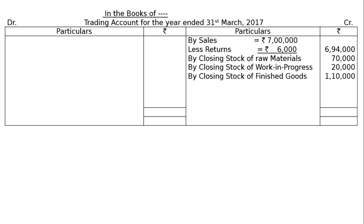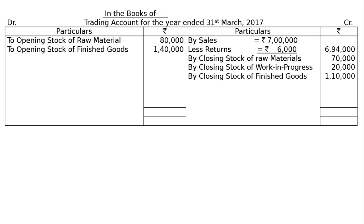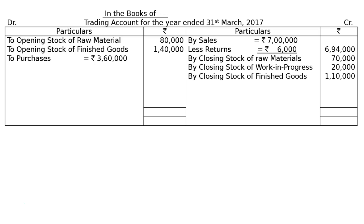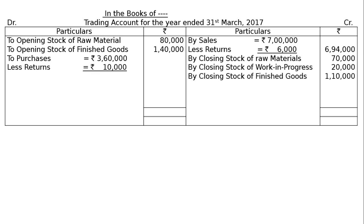Come down to the debit side. To opening stock of raw material Rs. 80,000, to opening stock of finished goods Rs. 1,40,000, to purchases Rs. 3,60,000 in the inside column, less purchase returns Rs. 10,000, giving a final column figure of Rs. 3,50,000.